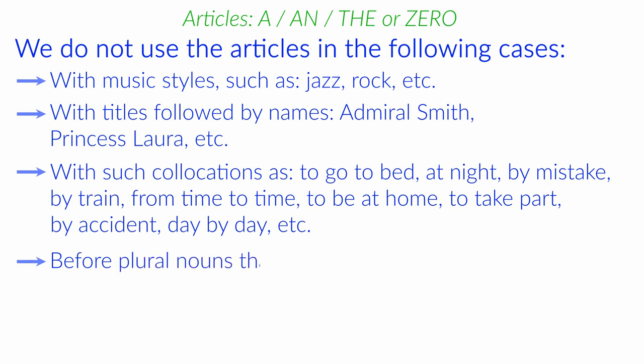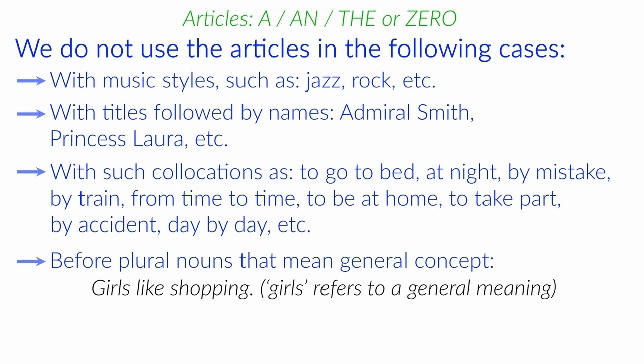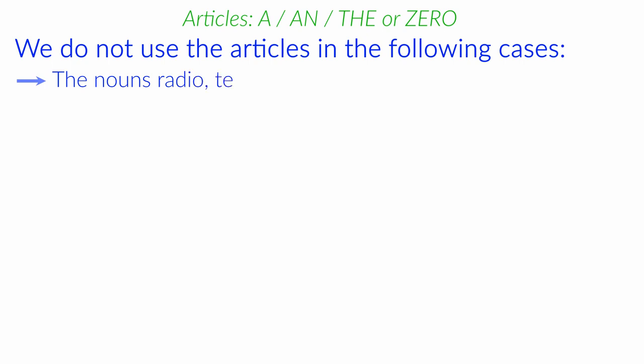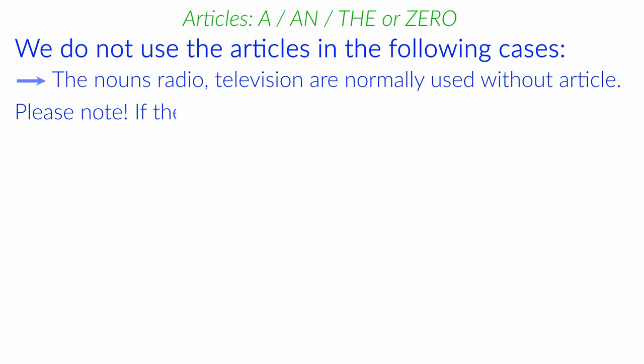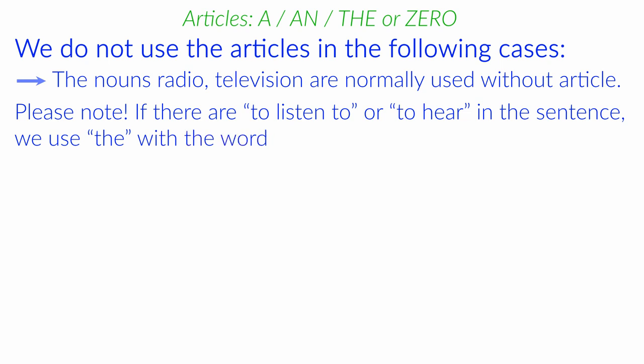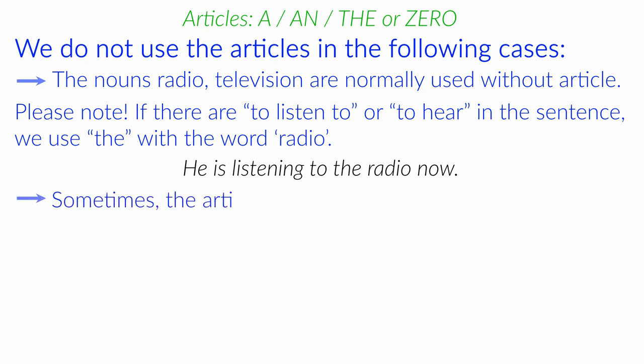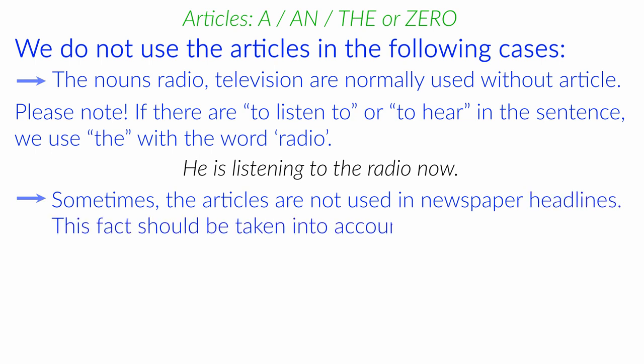Before plural nouns that mean general concept. For example, Girls like shopping. Girls refers to a general meaning. The nouns radio, television are normally used without article. Please note, if there are To listen to or to hear in the sentence, we use the with the word radio. For example, He is listening to the radio now. Sometimes, the articles are not used in newspaper headlines. This fact should be taken into account, taking the absence of articles for a grammatical error.